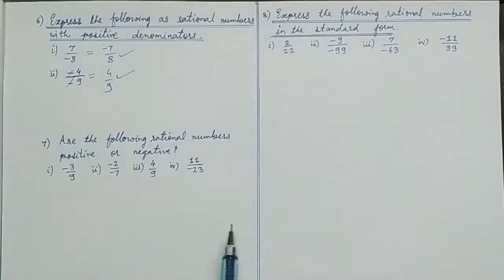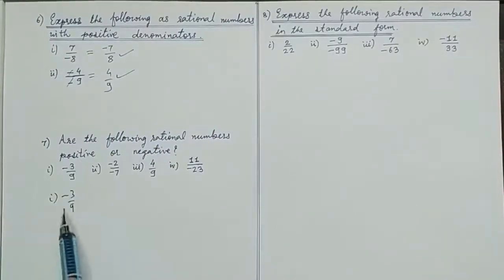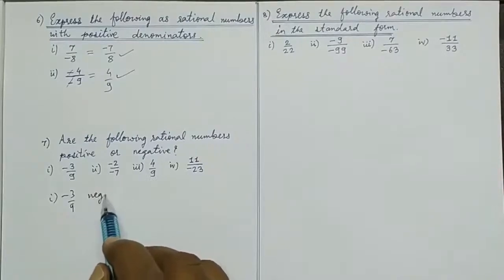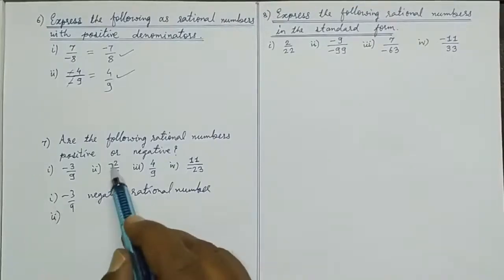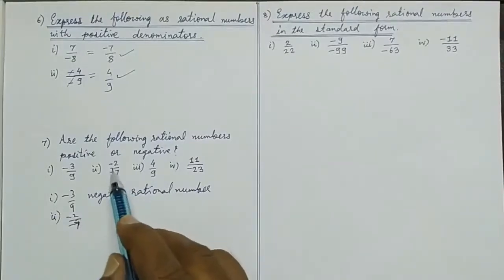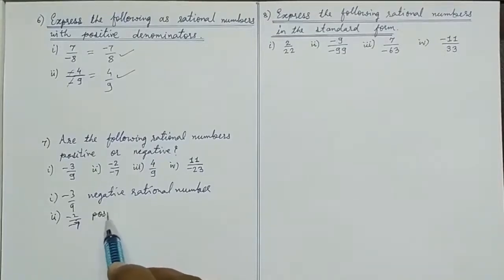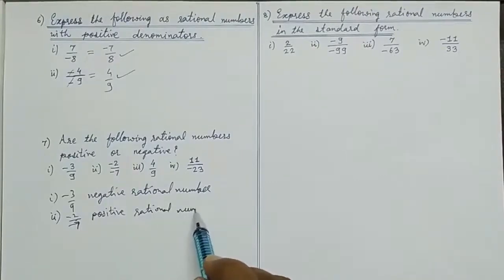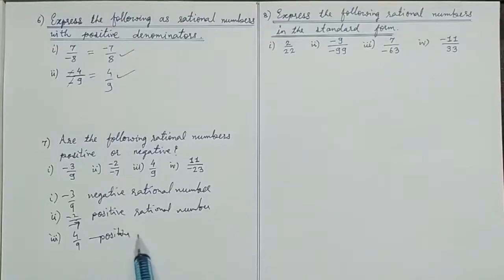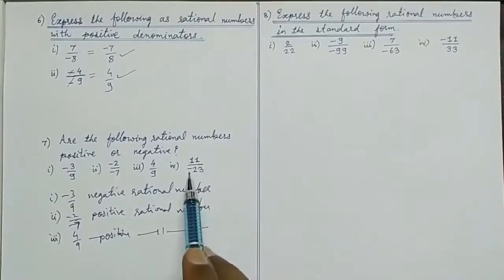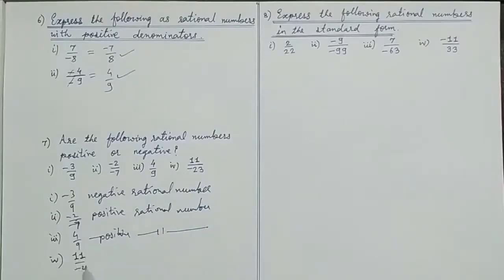Are the following rational numbers positive or negative? First: minus 3 upon 9 — no cancellation of minus in denominator, so this remains negative. It is a negative rational number. Second: minus 2 upon minus 7 — minus and minus cancel, so this is a positive rational number. Third: 4 upon 9 — already positive, no negative sign, so positive rational number. Fourth: the denominator minus can be written to numerator, the minuses do not all cancel, so the fourth is a negative rational number.